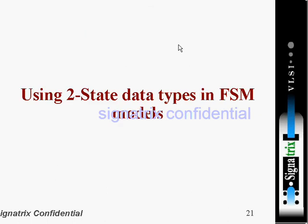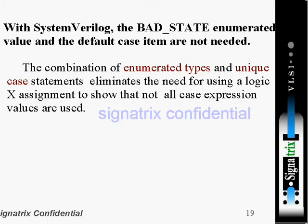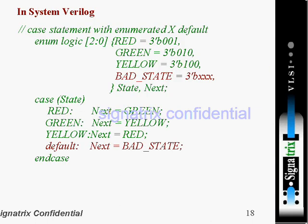The last subtopic in this discussion is using two-state data types in FSM models. In the previous example, what data type did we use? Logic. Logic is a four-state data type.